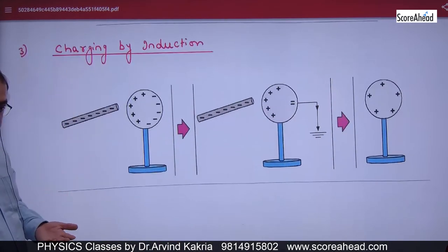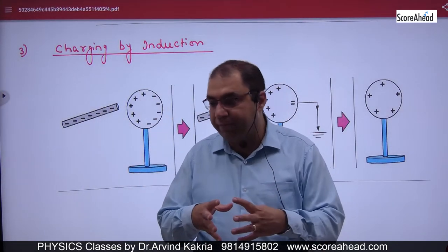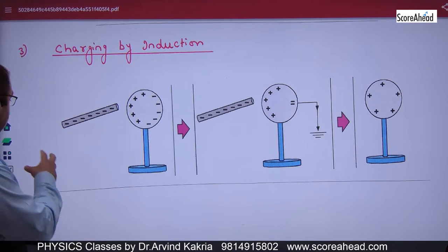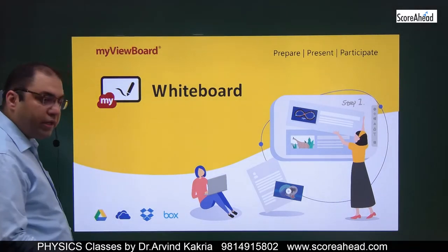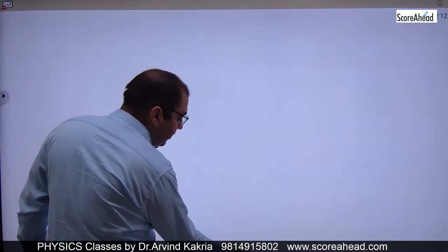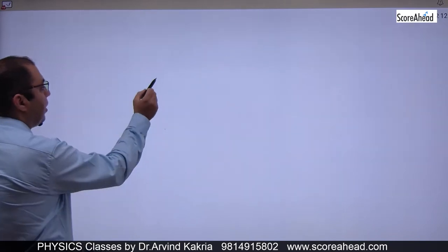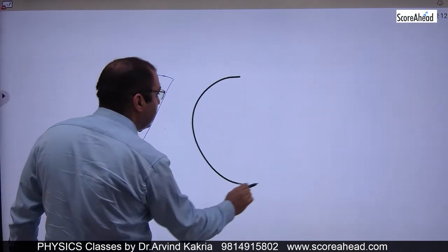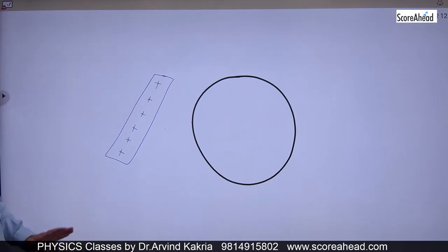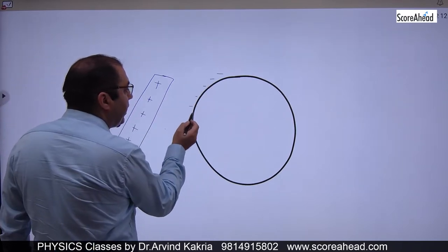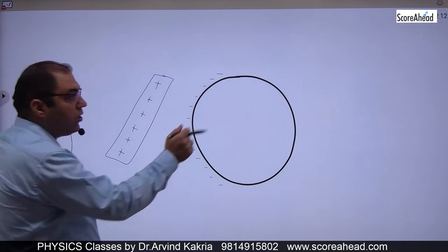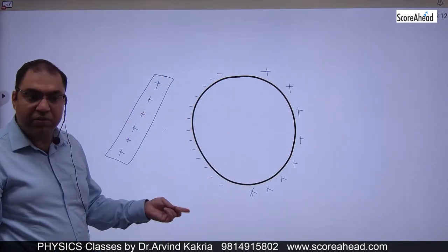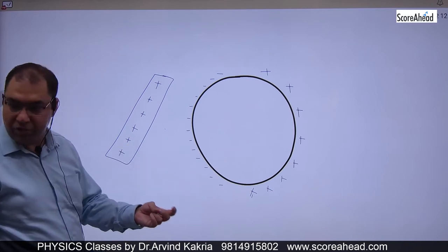Next is charging by induction. In induction, you charge two bodies without touching them — without contact. Suppose you have a positively charged body brought near a neutral conductor. The positive charge attracts electrons toward the near side of the neutral body, causing deficiency on the far side. A charge is induced on the neutral body without any contact.